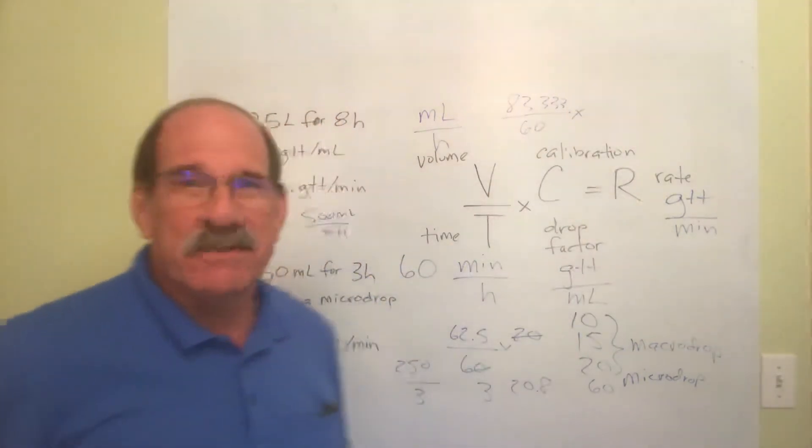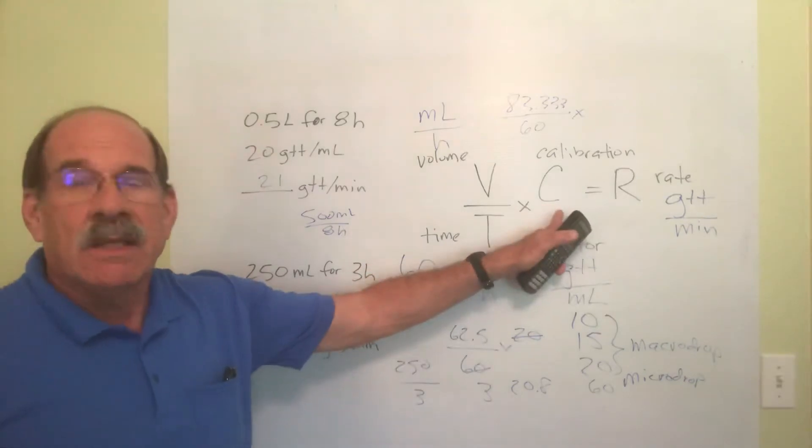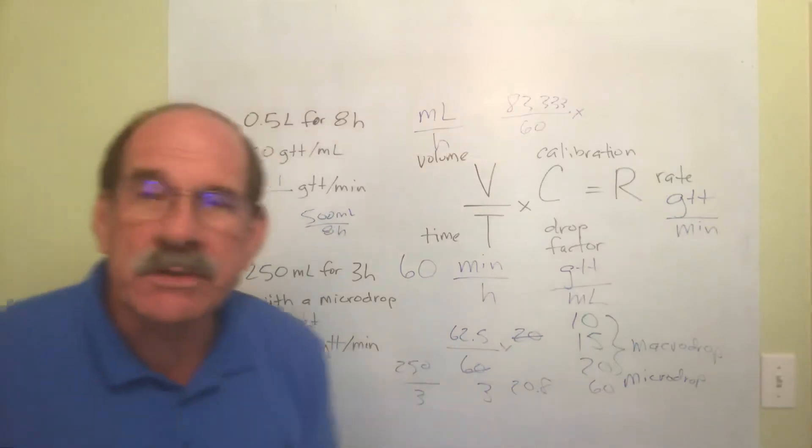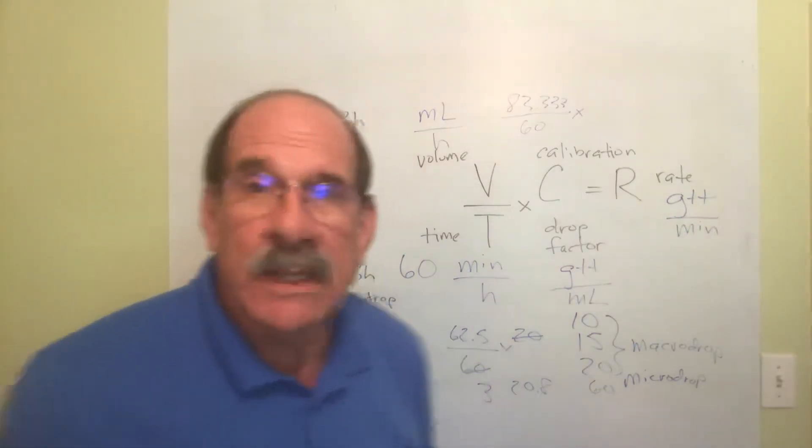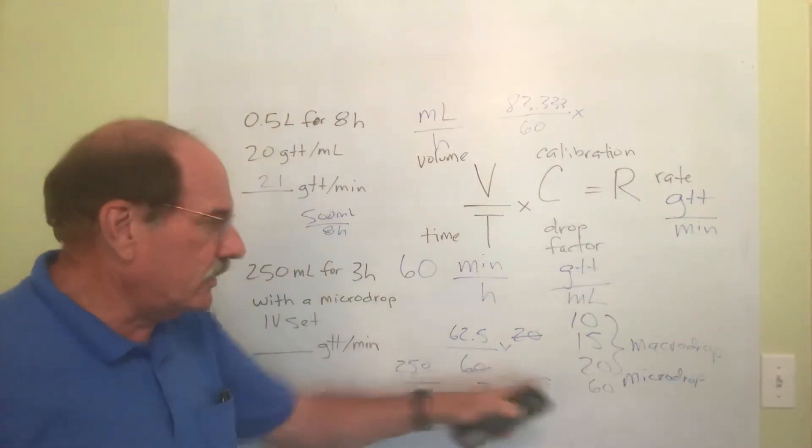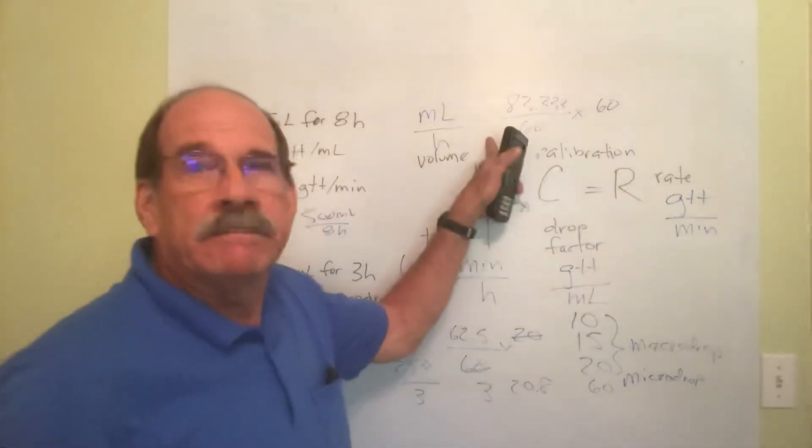Oh look what happens here, this is so neat. What is my drop factor? What's C? The calibration, drop factor, call it what you want to. No don't call it what you want to, it's either a calibration or drop factor. It's a micro drop. Ah, that means 60. That means the calibration is 60.